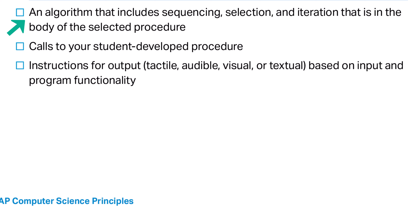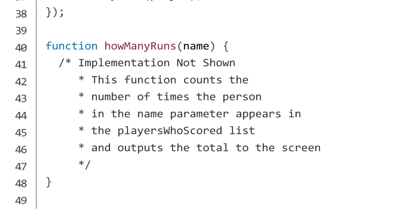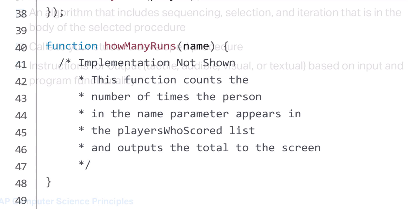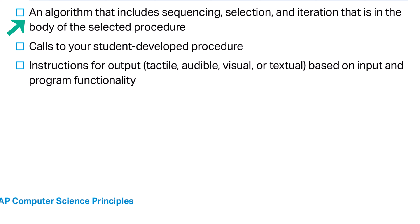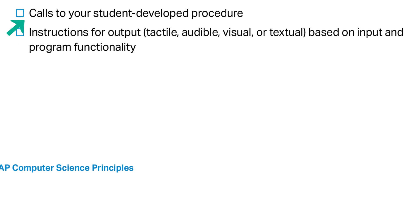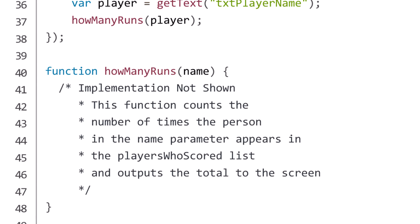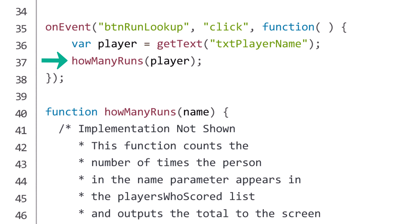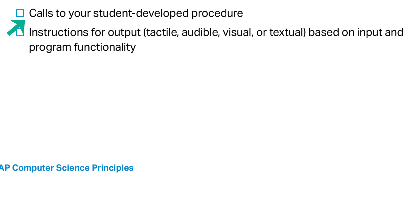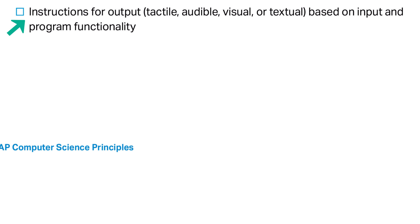Your program also needs an algorithm that includes sequencing, selection, and iteration in the body of the selected procedure. The body of my procedure includes a meaningful use of sequencing, selection, and iteration. Check out resource number three to learn more about these concepts. The how many runs procedure gets called when the user clicks the Lookup Runs button. Your program must also include instructions for output based on input and program functionality. My sample program takes input, processes it into new data, and outputs useful information. You can include comments in Component A, but make sure you include all of the code — don't redact any of your code in Component A.